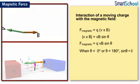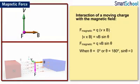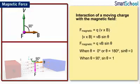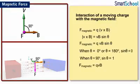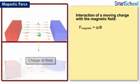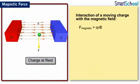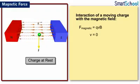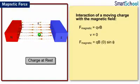If the charge is moving perpendicular to the direction of the magnetic field, θ = 90°. In this case, the charge experiences maximum magnetic force, F_magnetic = QVB. If the charge is not moving in the magnetic field, that is, its velocity is zero, then the charge does not experience any force since F_magnetic = 0.